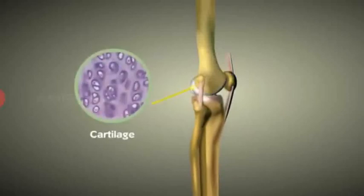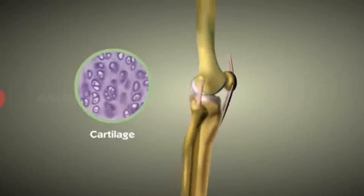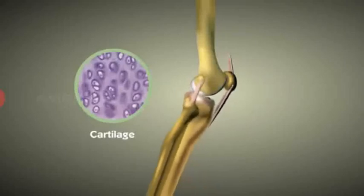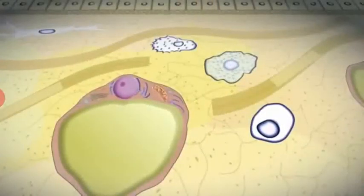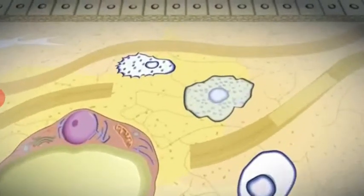Cartilage protects bones by preventing them from rubbing against each other. It is a tough but flexible tissue. Areolar fills the space inside the organs. It is gel-like with both elastic and non-elastic fibers.